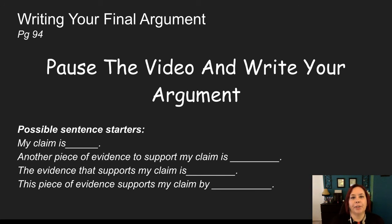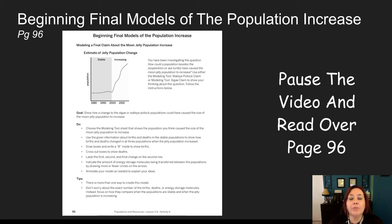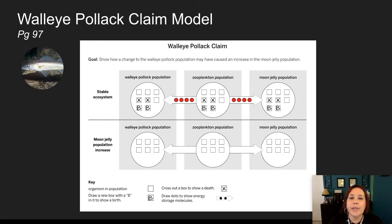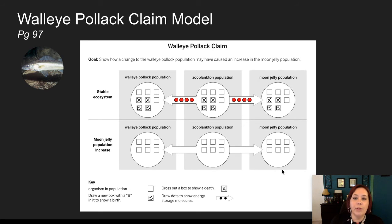Congratulations on creating your final argument. We're going to take a moment now and create a final model of the moon jelly population increase. Pause the video and read over page 96. Now think back to lesson 2.7 and the models we created regarding the decreasing deaths and increasing births in the moon jelly population and how the zooplankton and the leatherback turtles related to those. We're going to do the same thing again. Look at page 97 — if you addressed the claim that a decrease in the walleye pollock population caused an increase in the moon jelly population, fill out this model, then I'll come back and show you how I filled out mine.